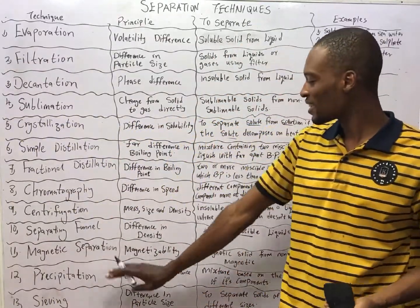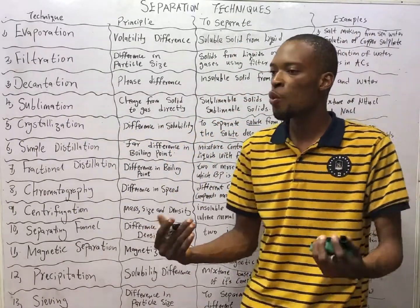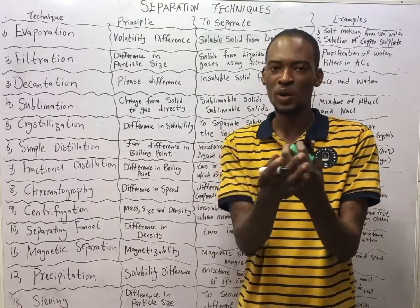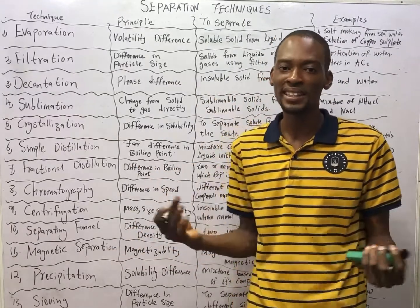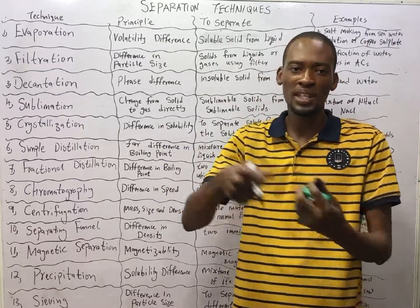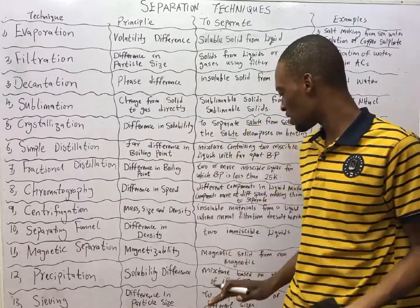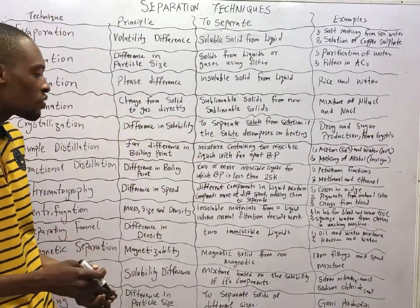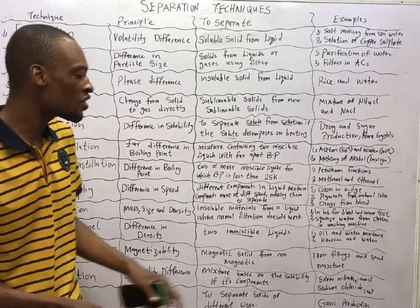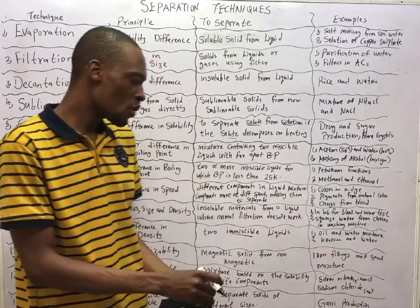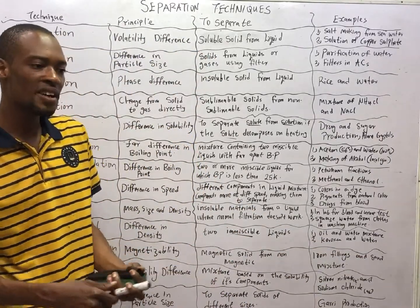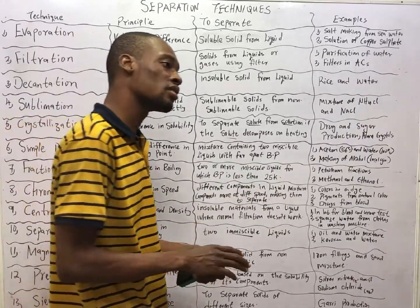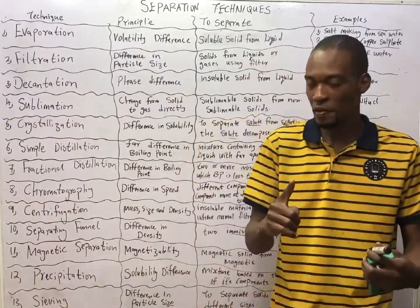Magnetic separation works based on the principle of magnetizability. When you have two materials and one can be magnetized while the other cannot, you simply use a magnet to remove the one that can be magnetized, leaving the other behind. An example is iron filings and sand — iron filings can be magnetized, so you simply magnet them and remove them from the sand.